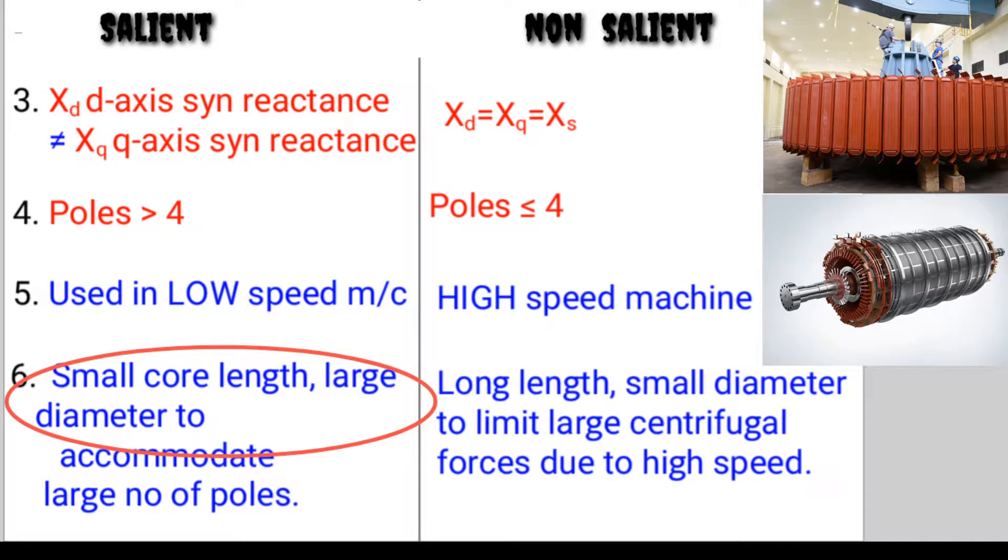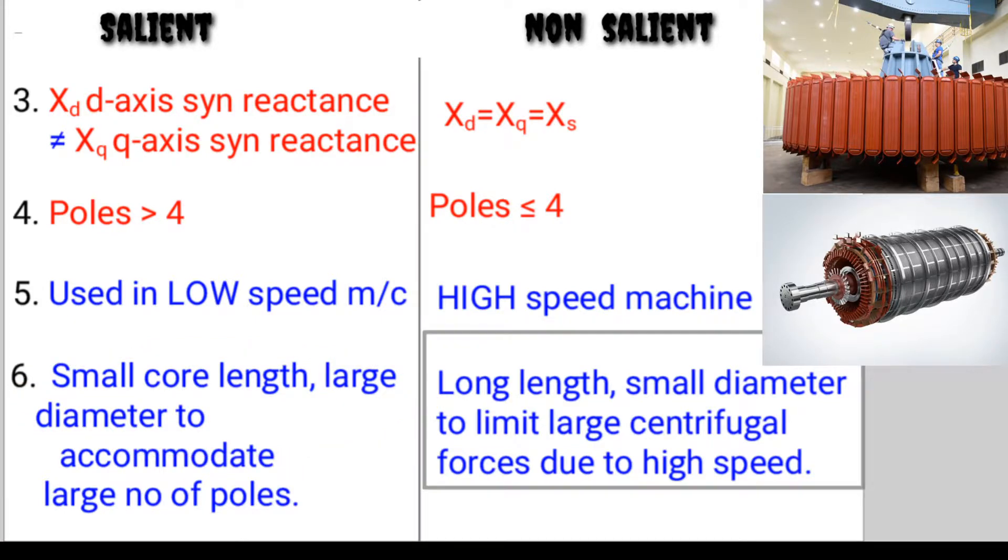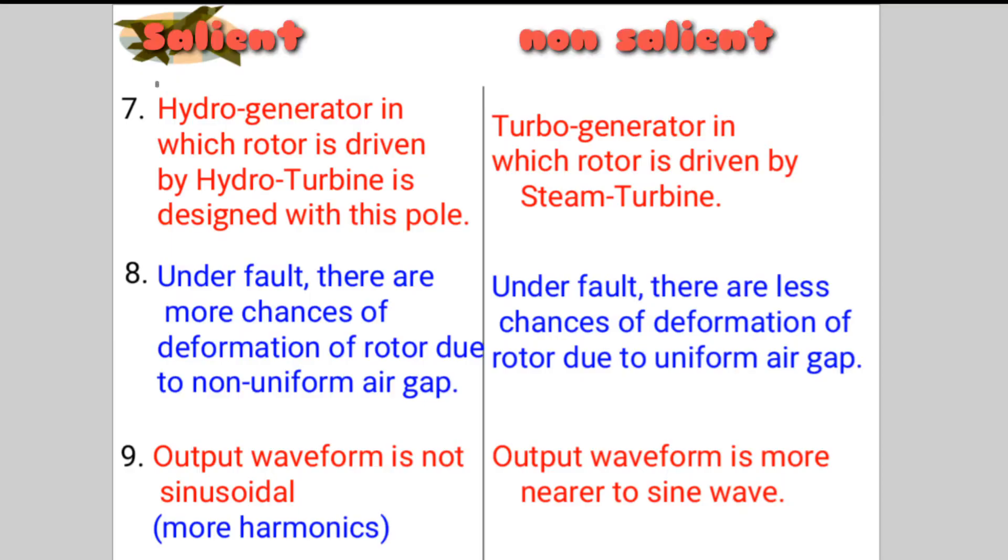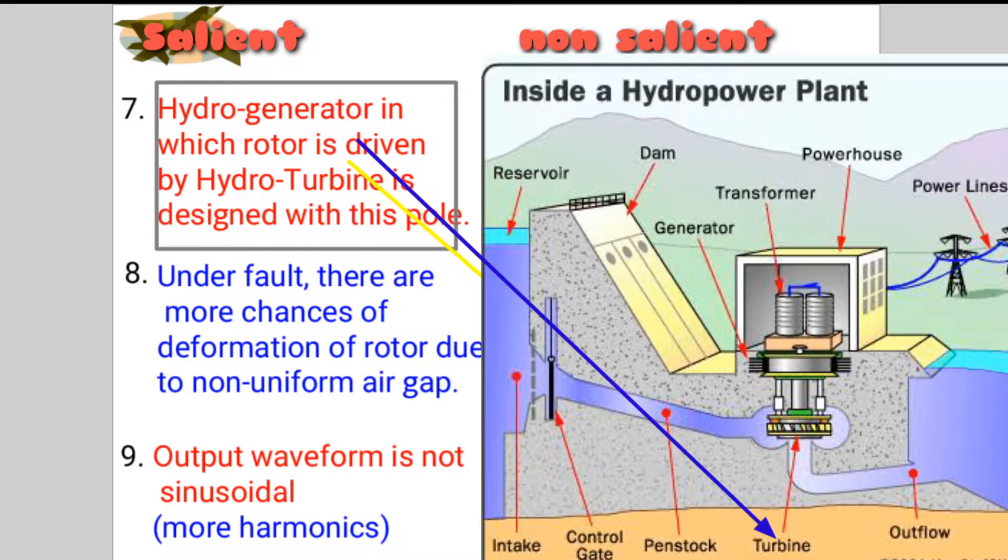It has small core length, large diameter to accommodate large number of poles. In cylindrical pole, long length, small diameter to limit large centrifugal forces due to high speed.